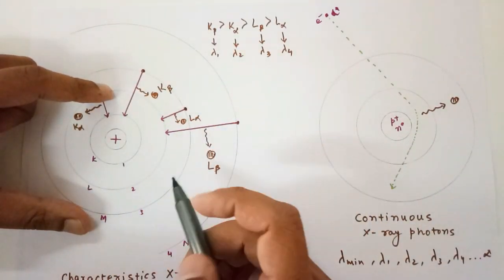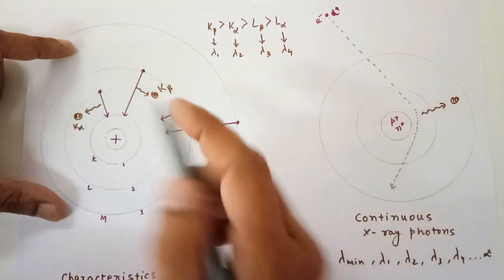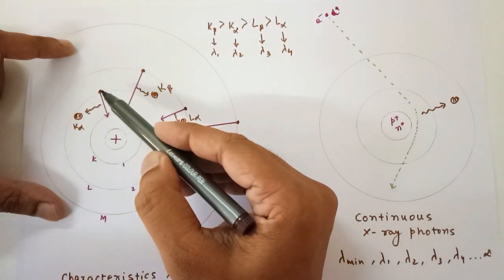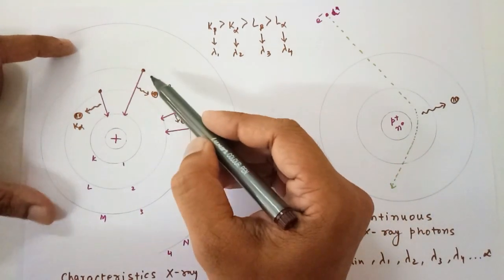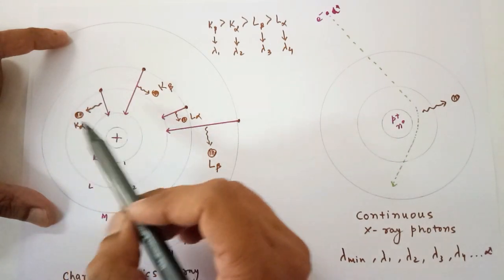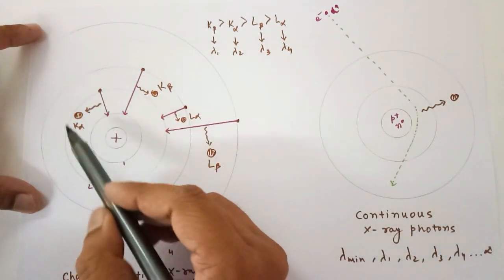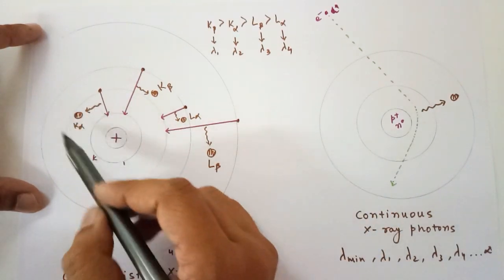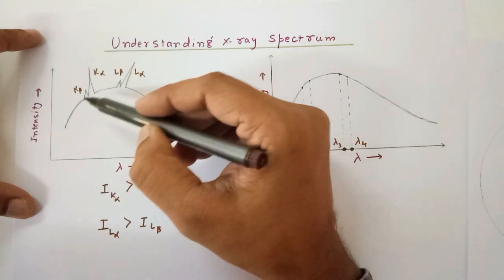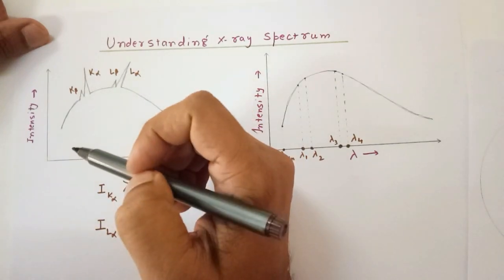For example, suppose we have 1000 anode tungsten atoms each with a vacancy in the K shell. Out of 1000 atoms, in 900 of them the vacancy would be filled by the neighboring L-shell electrons, producing K-alpha photons. In the remaining 100 atoms, electrons from upper orbits jump down, producing K-beta. So the number of K-alpha photons is very large while K-beta photons are comparatively fewer, which is why K-alpha and L-alpha show very sharp, prominent peaks. Note that a single K-beta photon still has larger energy than a single K-alpha photon.